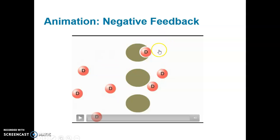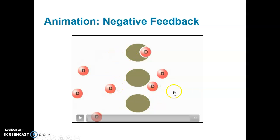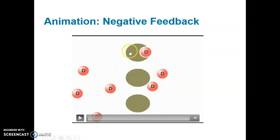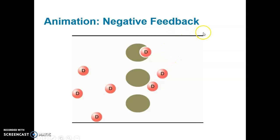If molecule D is consumed for whatever process and the concentration drops, the process will continue again to make more molecule D until enough is made, and then it shuts the process down. It negates the making of the molecule — that's why it's called a negative feedback mechanism.